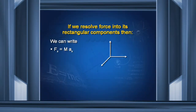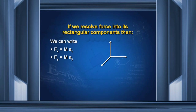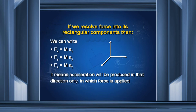Since acceleration and force are both vector quantities, we can resolve force into rectangular components: Fx = mAx, Fy = mAy, Fz = mAz. This means acceleration is produced only in the direction in which force is applied. If force acts along the x-axis, acceleration is along x; if along y, acceleration is along y; if along z, acceleration is along z.